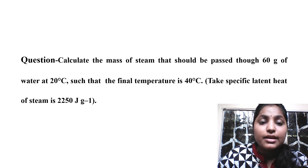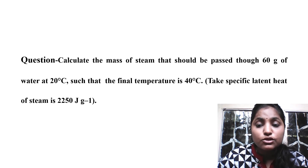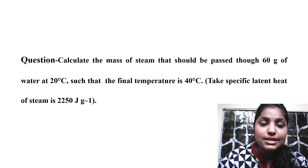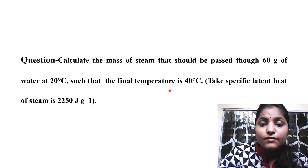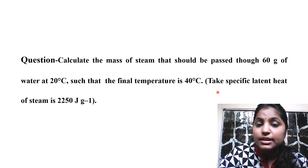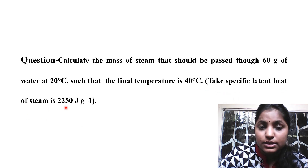Hello, welcome to Evyphysics. Let's discuss one question from the specific heat portion. The question is: calculate the mass of steam that should be passed through 60 grams of water at 20 degrees centigrade such that the final temperature is 40 degrees centigrade. The specific latent heat of steam is given.